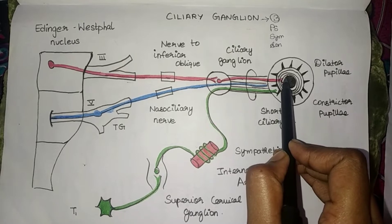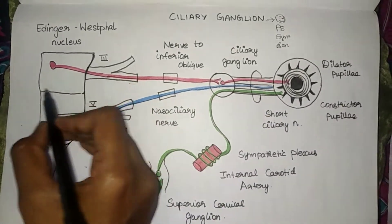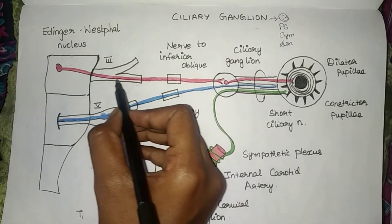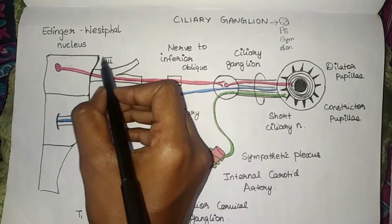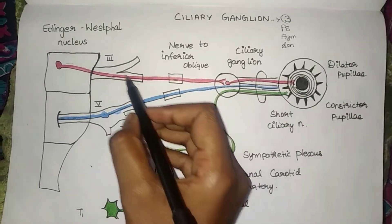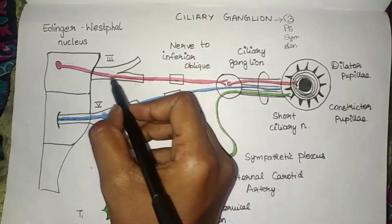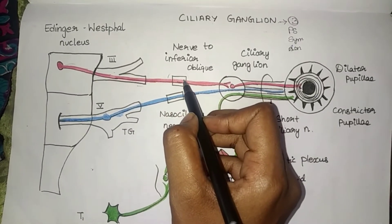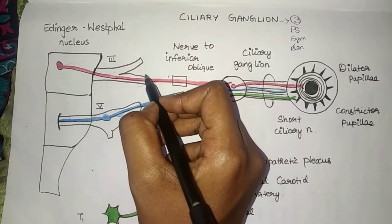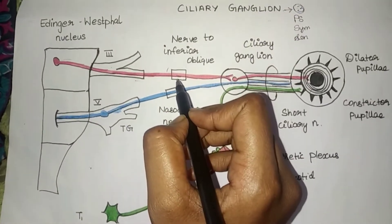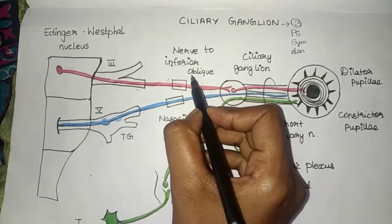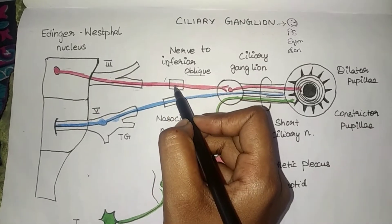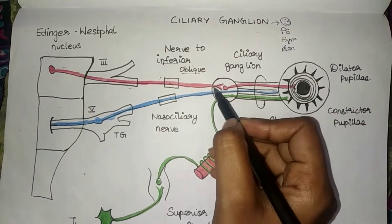The parasympathetic root arises from the Edinger-Westphal nucleus in the midbrain. From this nucleus, the oculomotor nerve — the third cranial nerve — arises. The oculomotor nerve has a superior ramus and an inferior ramus. In the inferior ramus, the nerve to the inferior oblique muscle branches off and continues towards the ciliary ganglion as pre-ganglionic fibers.